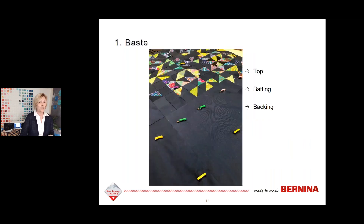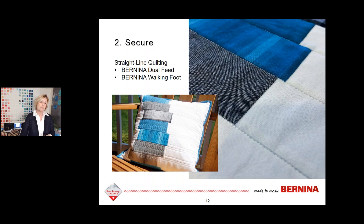The first step is to simply baste the quilt layers — the top, batting, and backing all together. There is no stabilizer used when computerized quilting. Basting with safety pins is my personal preference, but you can use your preferred method. The next step is to add additional securing of the layers, which prevents any shifting while hooping and re-hooping the quilt, and it allows me to remove the safety pins so they're not in the way.